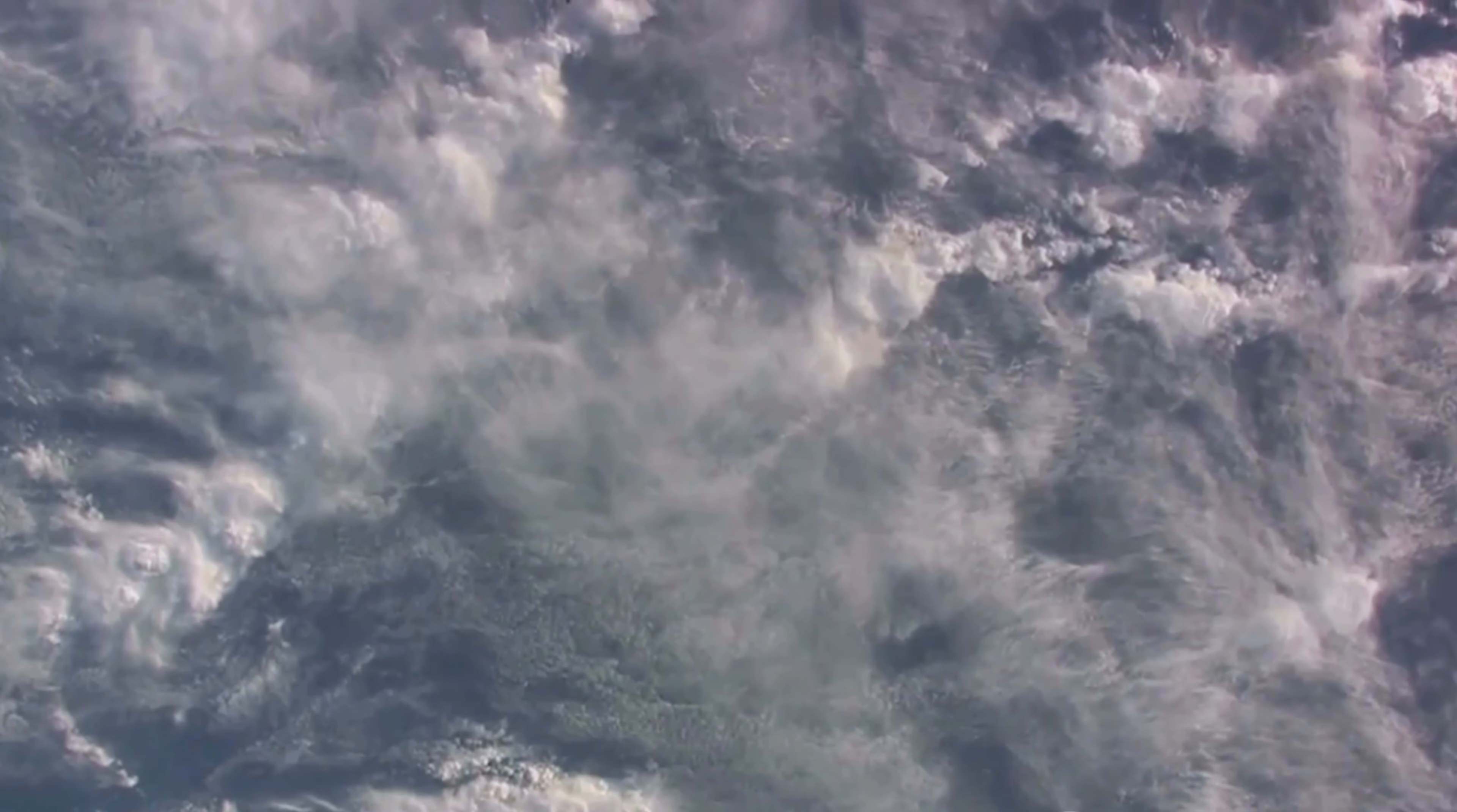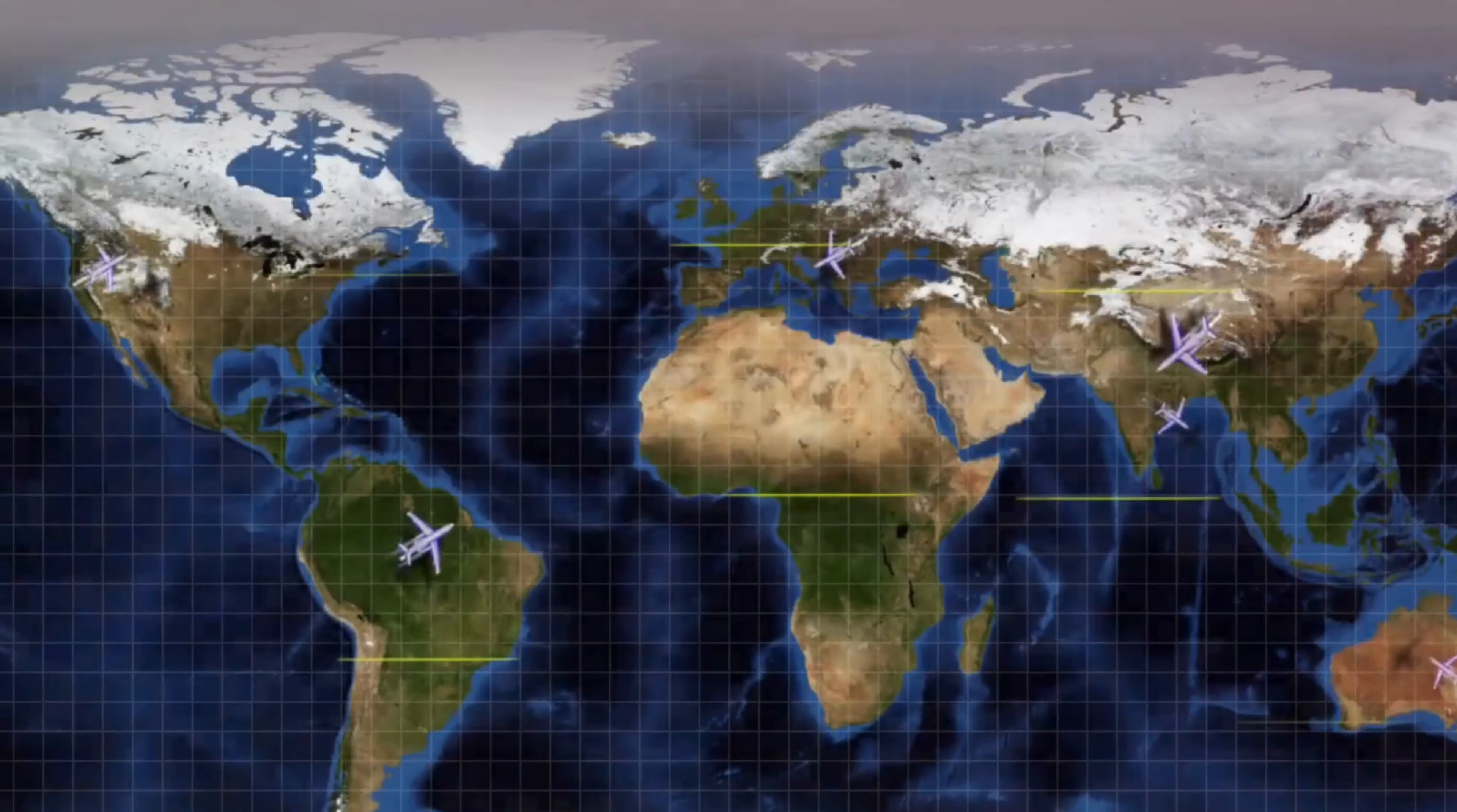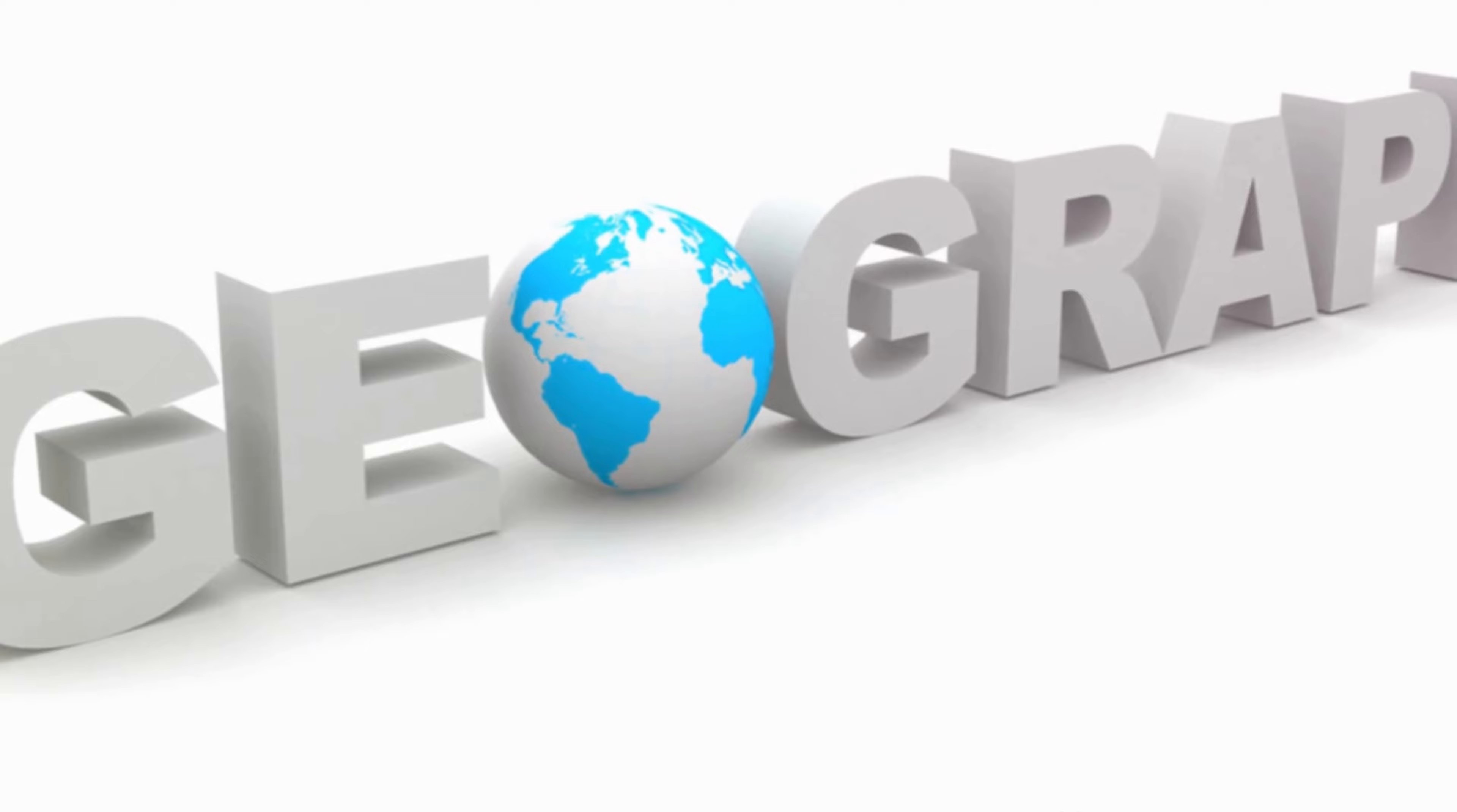Navigational systems would also need a total overhaul. Our current methods rely on the Earth's spherical shape to determine the shortest and quickest routes. A flat Earth would mean rethinking our entire approach to travel. Imagine, for instance, a flight from New York to Beijing. On a round Earth, the quickest path is a great circle route, arching up over the Arctic. On a flat Earth, however, this would no longer be the case.